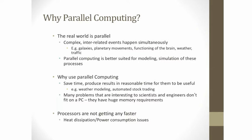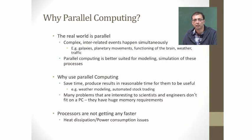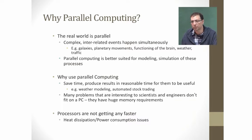The processors are not getting any faster — the clock frequency is not improving anymore. The primary reason is heat dissipation issues and power consumption issues. That means you have to resort to parallel computing. You are not going to get more speed out of the same processor, so you have to use multiple processors.